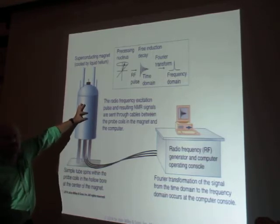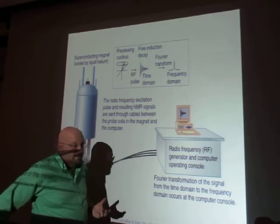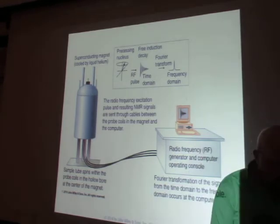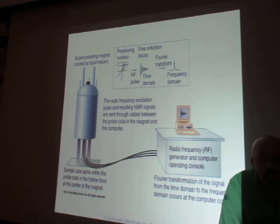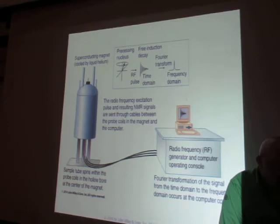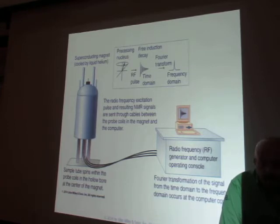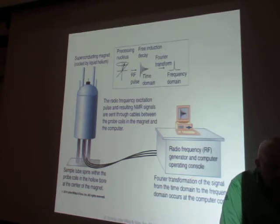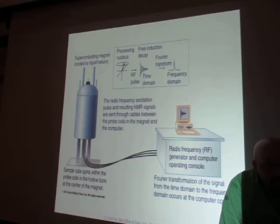All superconducting magnets that are known are only superconducting at very low temperatures. The highest temperature currently known for a superconducting magnet is about 80 Kelvin. The superconducting magnet in the spectrometer sits in a bath of liquid helium — same thing for your MRIs, which also have superconducting magnets sitting in a bath of liquid helium. The temperature of liquid helium is 4 Kelvin — very, very cold.